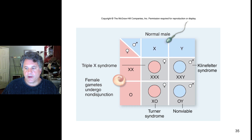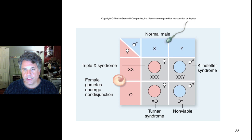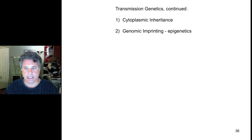We left off talking about some human genetic disorders and I'd like to finish off our treatment of transmission genetics — the inheritance of traits passed on from one generation to the next — before moving on to information flow within cells, the coding of information in DNA and the decoding of that information into gene function. Let's finish off by considering two additional phenomena: cytoplasmic inheritance and genomic imprinting.